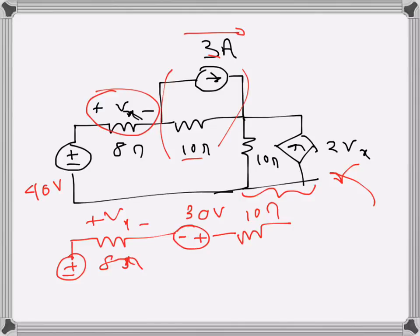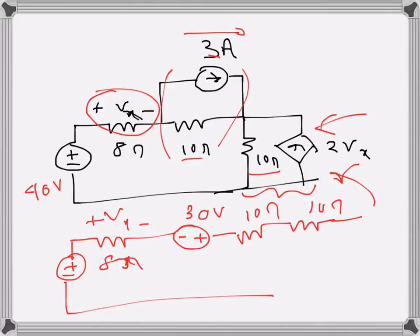I will also convert this one into a voltage source and a series resistance, that way I will get just one series circuit. This 10 ohms resistance I'm writing first, and then the voltage source. This is a current source and the direction is in this direction, so the voltage source polarity will be in this direction, and the value will be 2Vx times 10, so 20Vx.